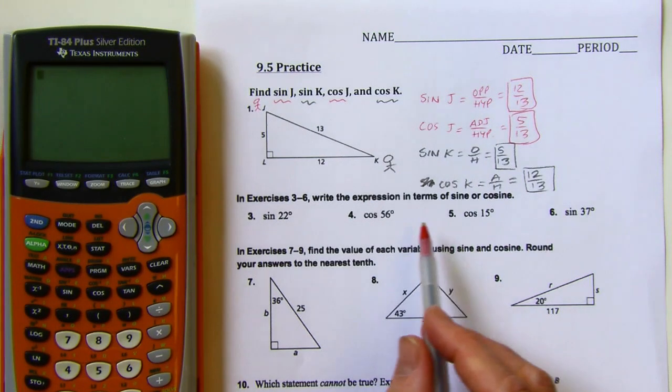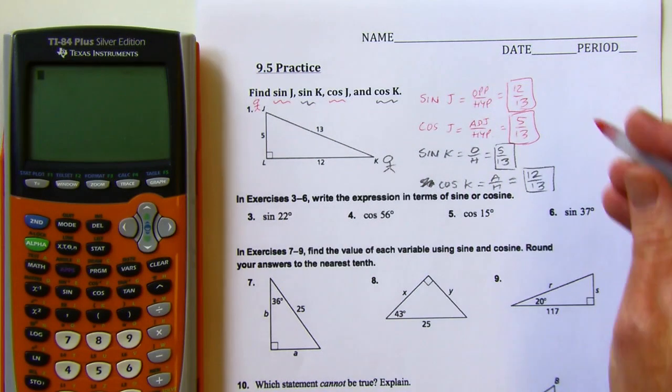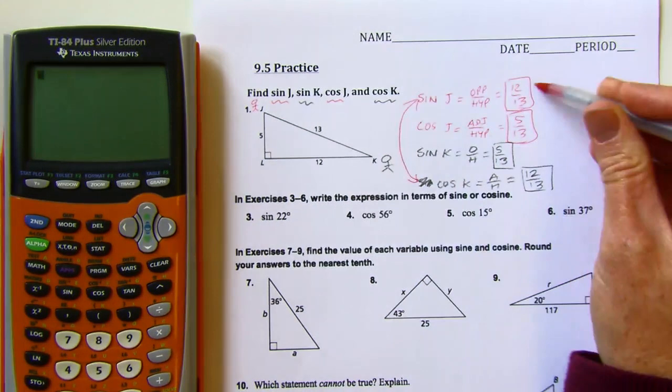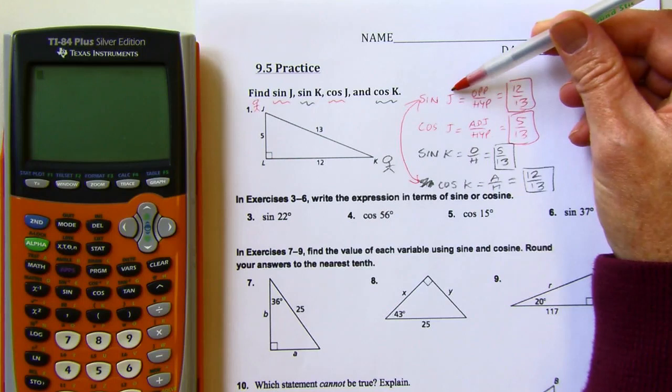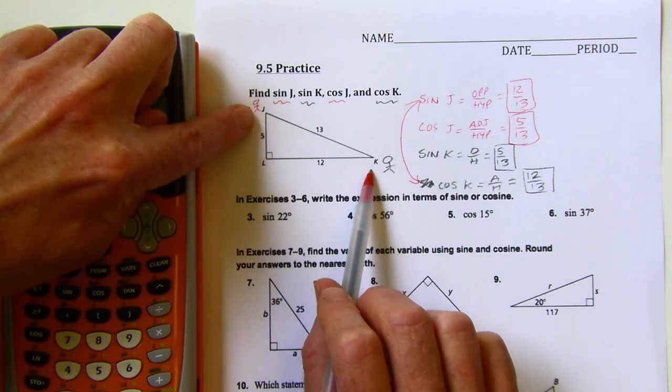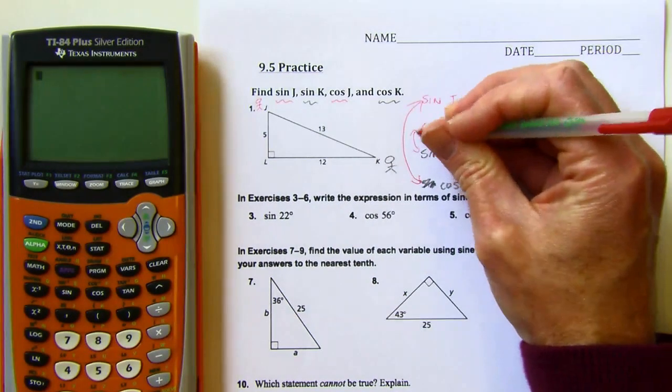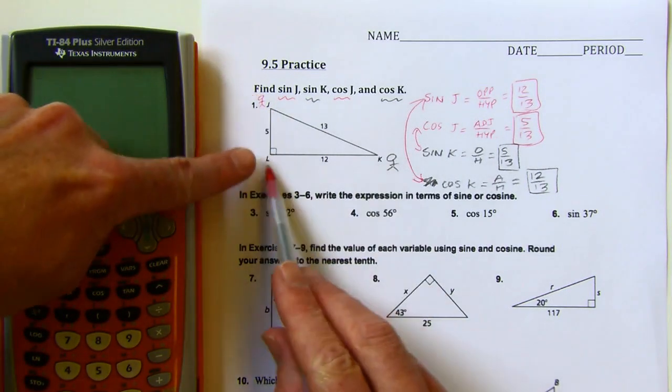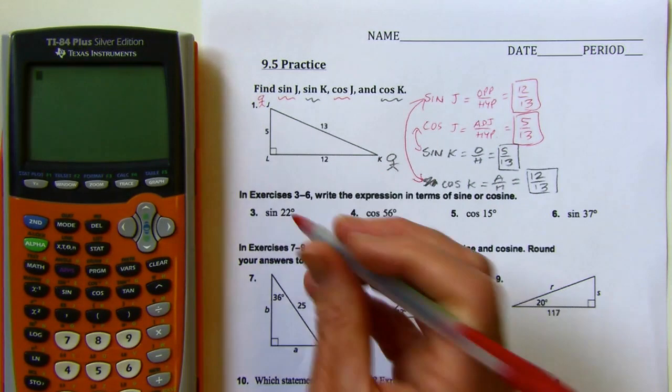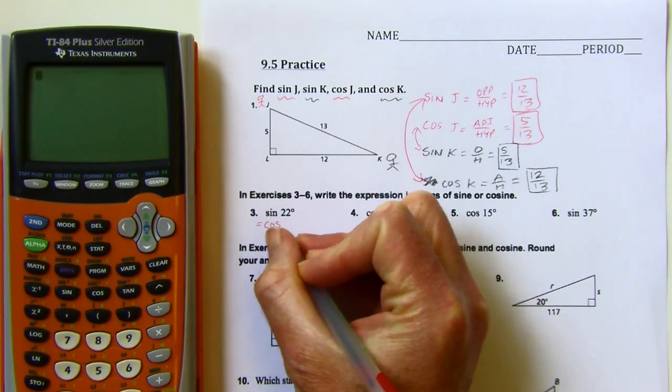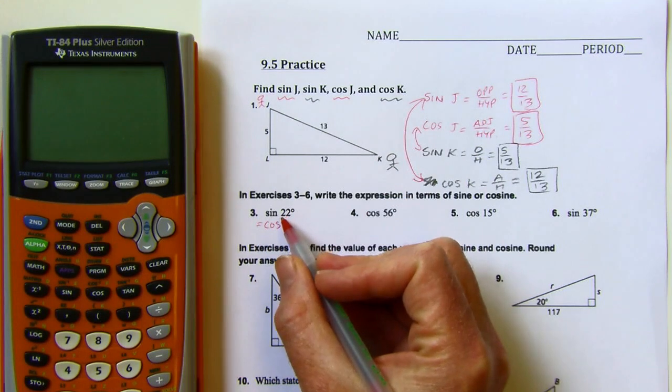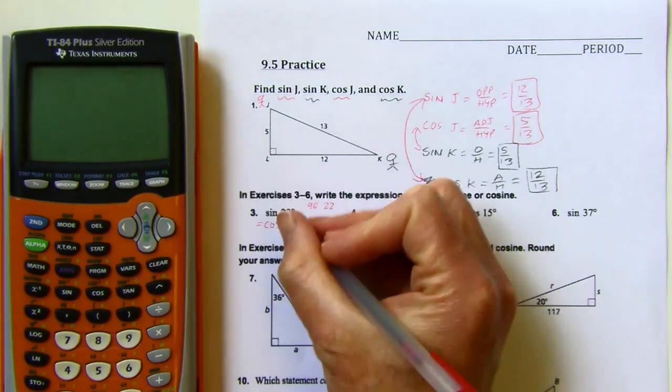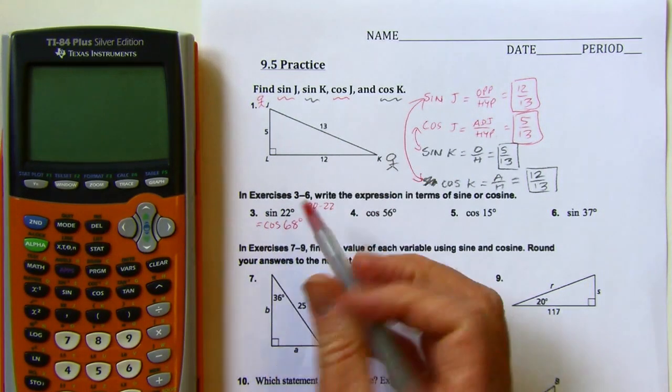All right, next up, write the expression in terms of sine or cosine. So you might notice that we can look at this. If you compare these two, they're both 12 over 13. And so if I go from the sine of one angle to the cosine of the other acute angle, it's going to be the same. So all I need to do is to write this in terms of cosine. First, write cosine. But then I'm going to take the complement of 22. So I'm thinking 90 minus 22, that's going to give me 68, right? So the cosine of 68 degrees is going to be equivalent to the sine of 22 degrees, because those are complements.